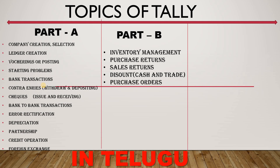Next are purchase orders and sales orders. We will cover godowns and godown management. Then multi-price levels: for example, I have a computer priced at 50,000 in the previous year, and the same model is 55,000 now. These are multi-price levels.